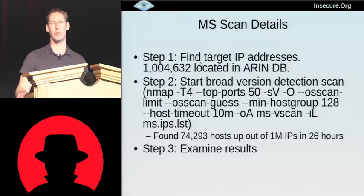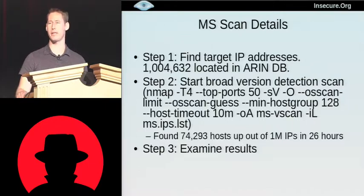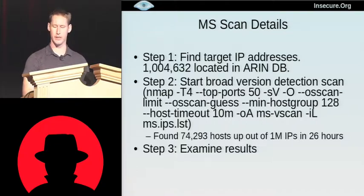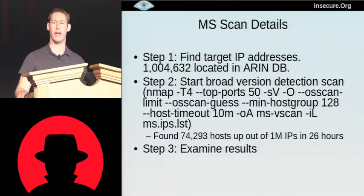There was a time when this sort of scan could take a month or more for NMAP to run against a million IPs. But NMAP has gotten a lot smarter over the years. This scan finished in about 26 hours — about one day — scanned all the IPs, and found 74,293 hosts up. I could have tuned it more to go faster, but making it too fast raises more notice on the network.